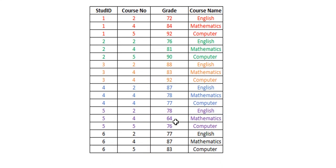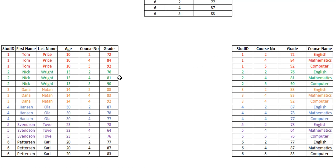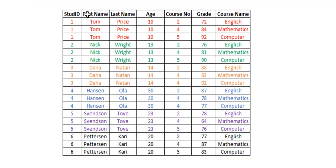If you continue the same way, you get this table. We have student ID, course number, grade, and course name. It still doesn't look complete because we have more information about the course but not enough about the student — we just have the ID. So we need to model this new table with the students table, connecting student ID 1 here with student ID 1 there, and so on. By the time we do this, we get the final table: student ID 1, course number 2 — English — and you can see that Tom Price got 72 in English, 84 in mathematics, and 92 in computer. Same for every other student.